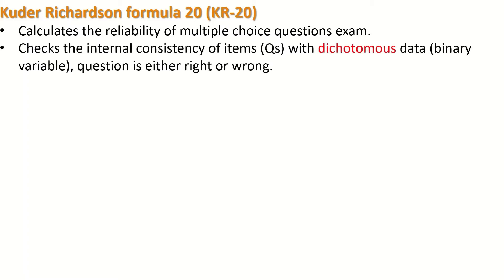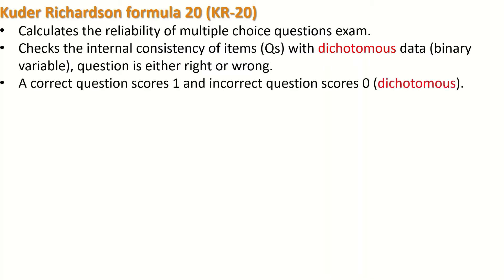It checks the internal consistency of items or questions that are dichotomous, i.e., having only two options: right or wrong. So the data are binary or dichotomous data. A correct question score equals one and an incorrect question score is recorded as zero. So the multiple-choice questions have only two possible answers, right or wrong — zero or one — making this dichotomous data.